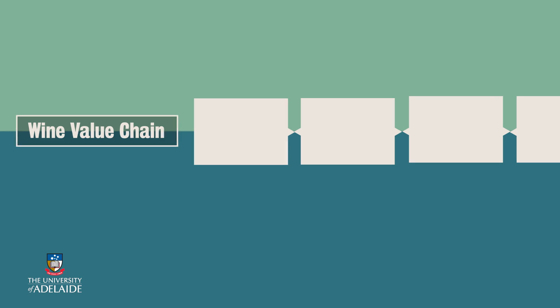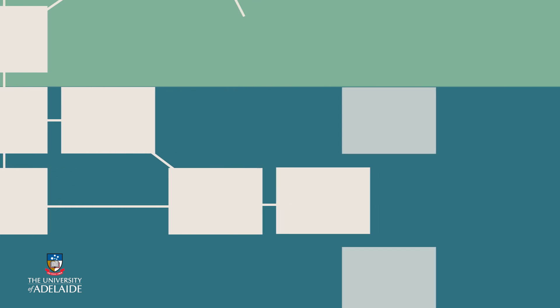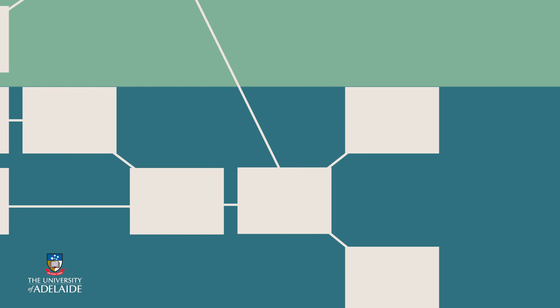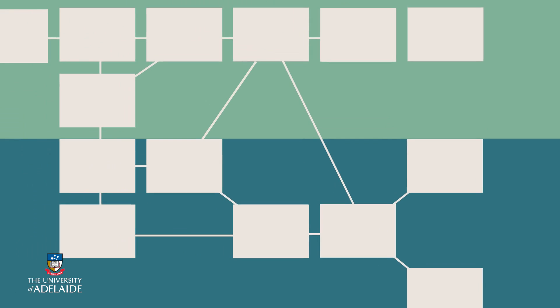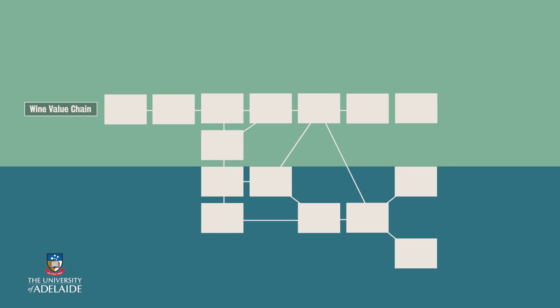Think, too, that the actors in this complex wine value chain may also be actors in other value chains for other markets. A grape grower, for example, may be contracted to supply several wineries. All of a sudden, that simple piece of string has turned into a three-dimensional web, with each actor in the value chain having links to a range of other actors for a multitude of different products.